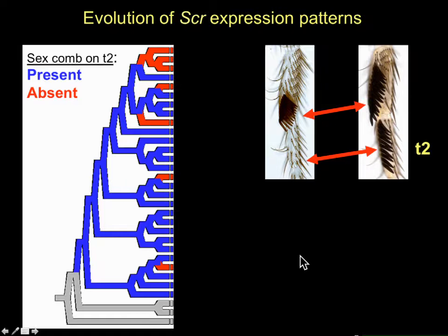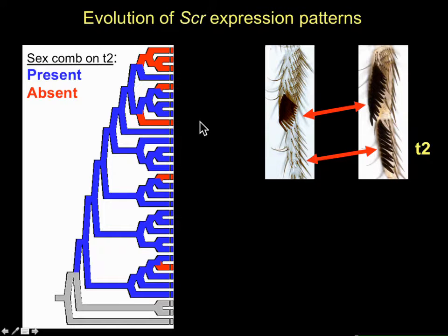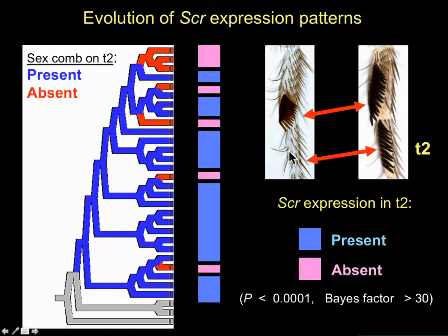Another difference is the location of the sex comb. Drosophila melanogaster has only one sex comb on the first tarsal segment, which is actually an exception — most species that have sex combs have them on the first and second tarsal segments. The distal sex comb has been lost independently several times. It turns out that character correlates very well with SCR expression: in species with a second sex comb, you can see high levels of SCR expression in that segment, while in species lacking it, SCR expression there is low.